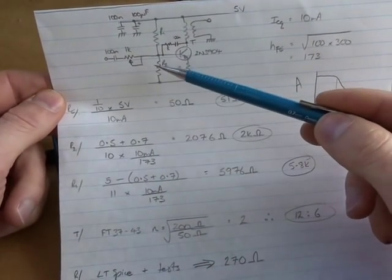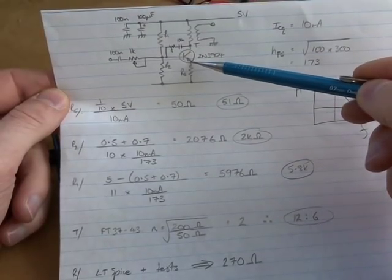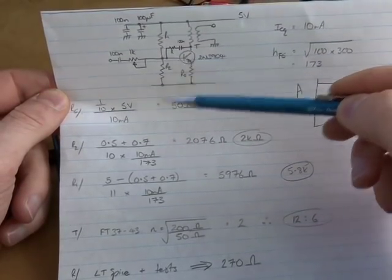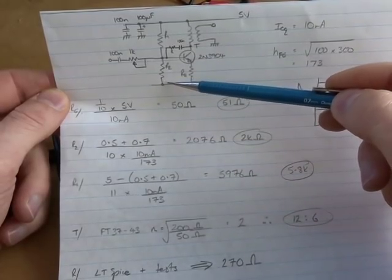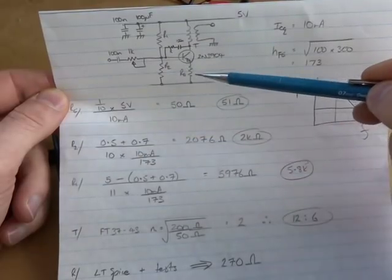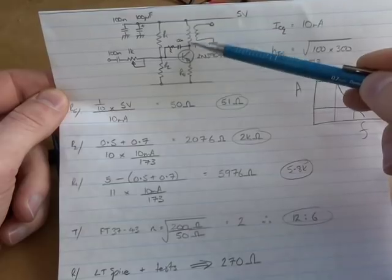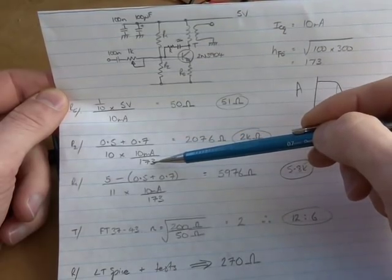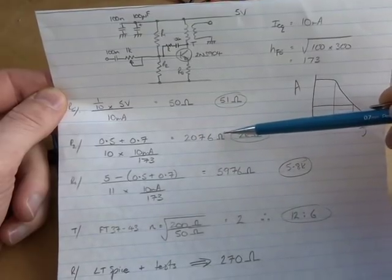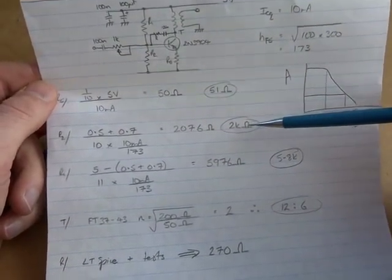R2, that value there. So it's going to be half a volt there, which is a tenth VCC plus 0.7, so 0.5 plus 0.7, then divided by 10 times the base current. So 10 times our collector current, which is approximately equal to, or close enough, equal to our emitter current, divided by 173 or beta DC. It comes out at 2076 ohms, so 2k ohms is close enough.